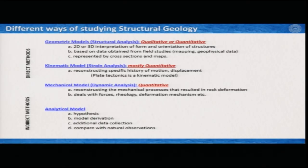There are three basic ways a structural geologist looks at structures in Earth or in nature. These are geometric models, kinematic models, and mechanical models, and you can classify them together as direct methods of observation.